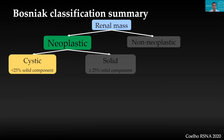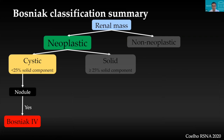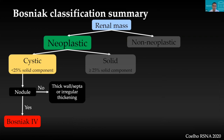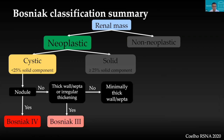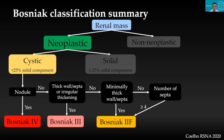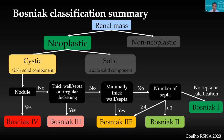A useful algorithm: start with the highest category. First, is there a nodule? If yes — type IV. No nodule — is there thick wall, thick septation, or irregular thickening? If yes — type III. Absent? Check for minimally thickened septations — if yes, type IIF. Absent? Look at number of septations: 4 or more thin septa is type IIF; up to 3 thin regular septa is type II; no septation and no calcification is Bosniak type I. In a worked example with clearly 4 or more septa, that is Bosniak type IIF.